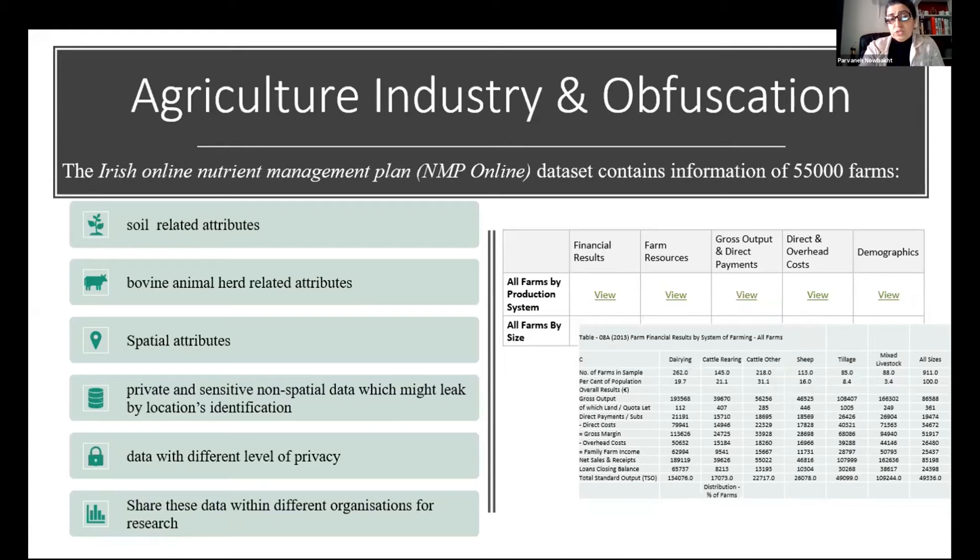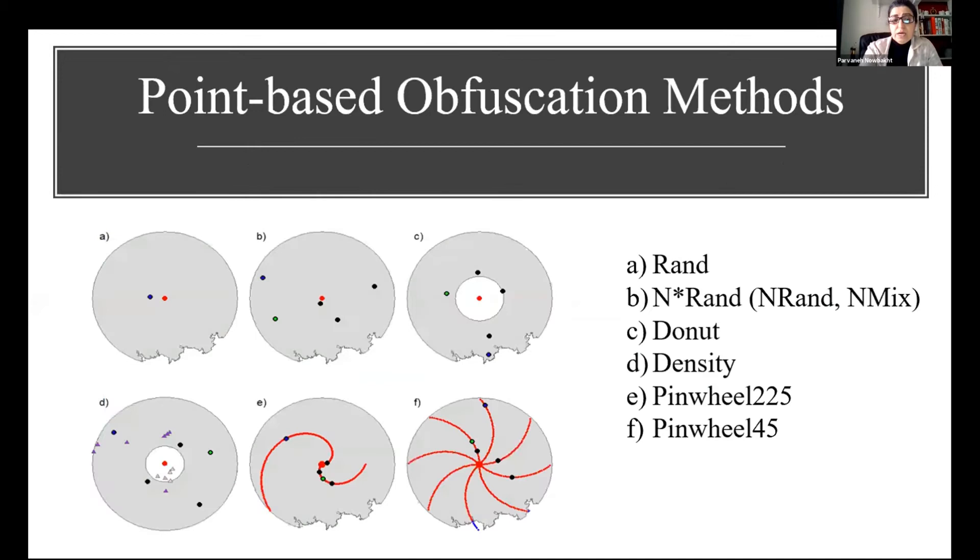The Irish Online Nutrition Management Plan dataset contains 55,000 farms information, including spatial attributes. This dataset could be shared with different organizations for research and development to give advice and support to the farmer for their nutrition management plan. But currently, this data does not adhere to data privacy protection regulations. So the aim of this project is to apply various randomization and k-anonymity methods, which are two types of obfuscation methods in this data.